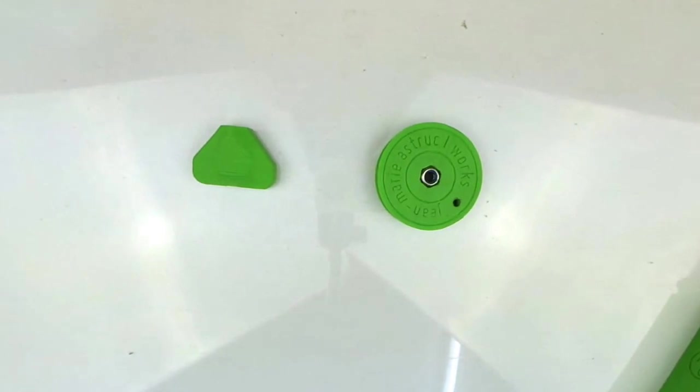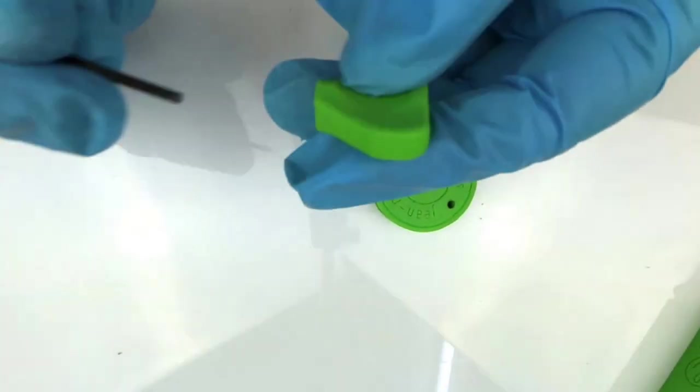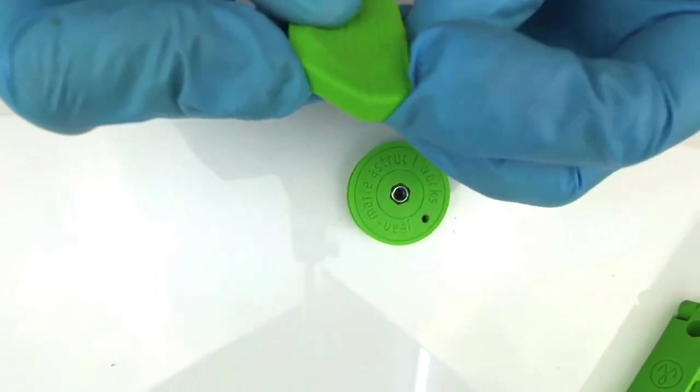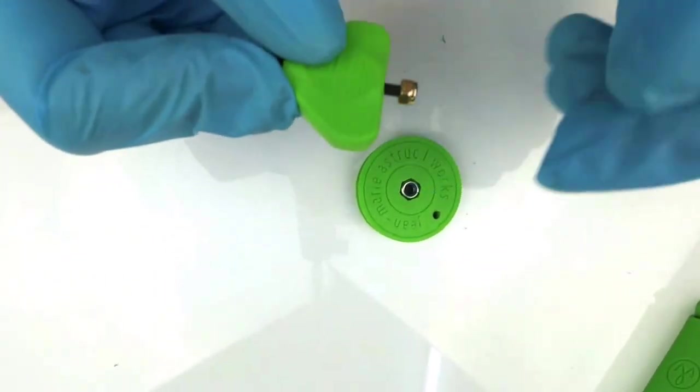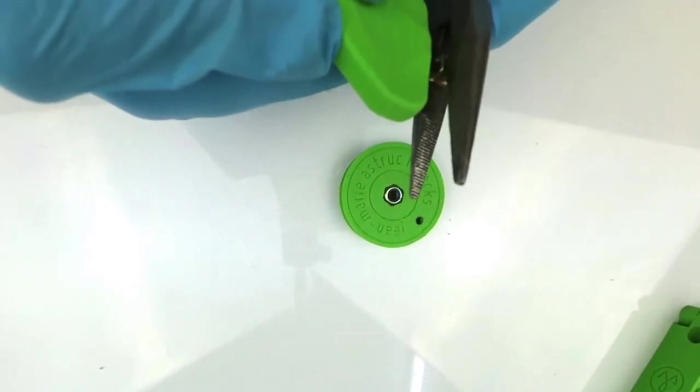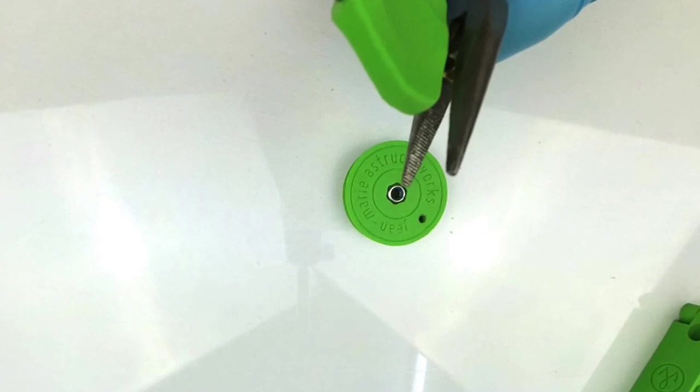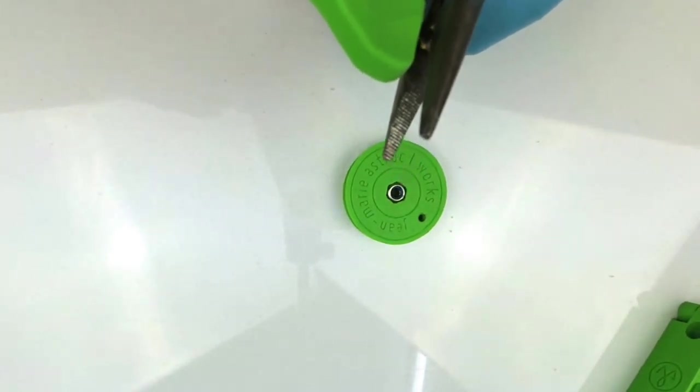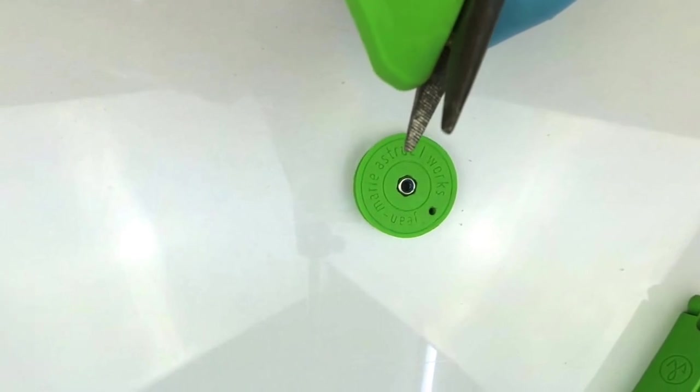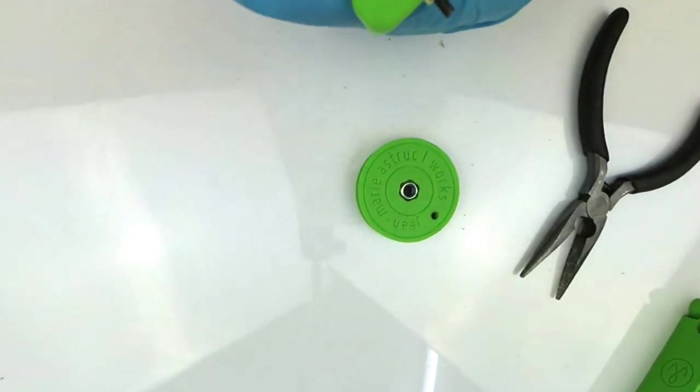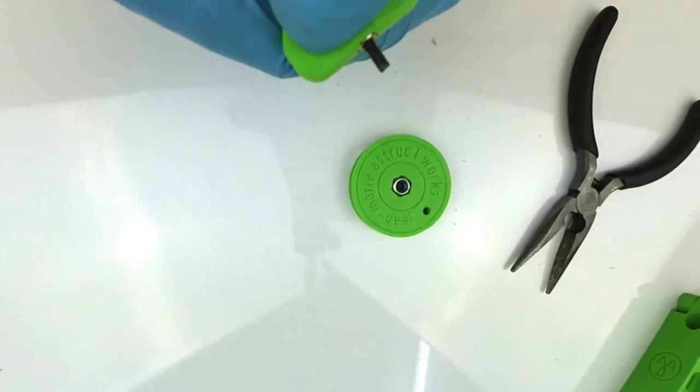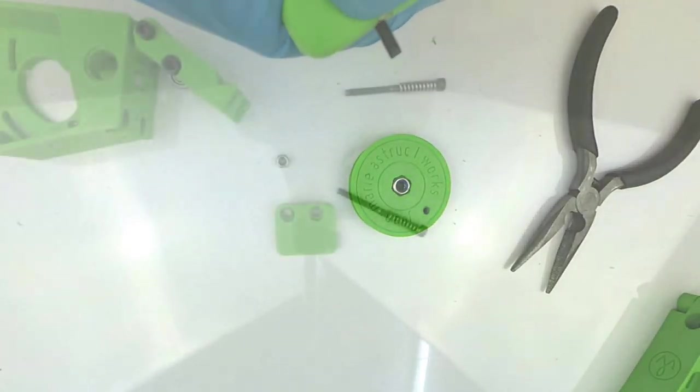Now we need to do the same with the crank. So insert your screw, drive your nut on the screw. Hold it with a pair of pliers, and just drive slowly the nut into the part like so. Once again, when it's flush, it's okay.